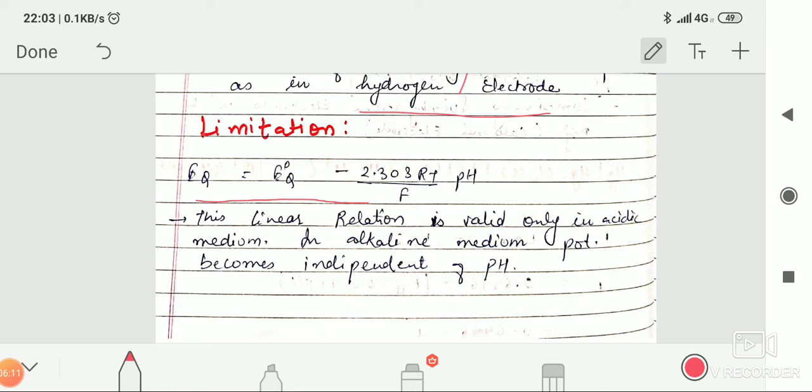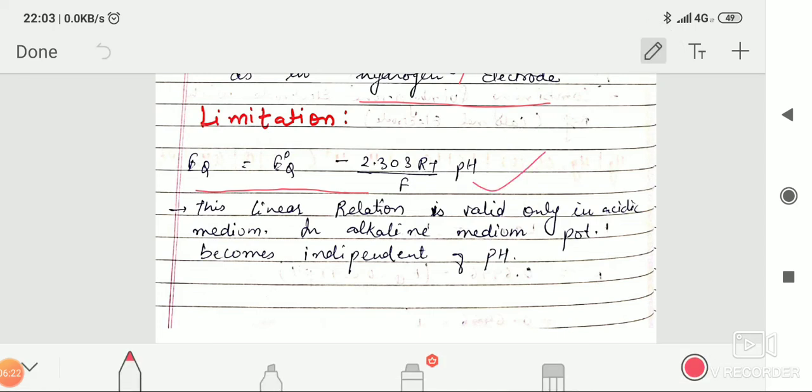The limitation of this cell is that this particular Nernst equation of quinhydron electrode, which tells the relation between the EMF of the cell and pH of the solution, is valid only in acidic medium. In alkaline medium, this equation becomes independent of the pH. This is the limitation of this quinhydron electrode.